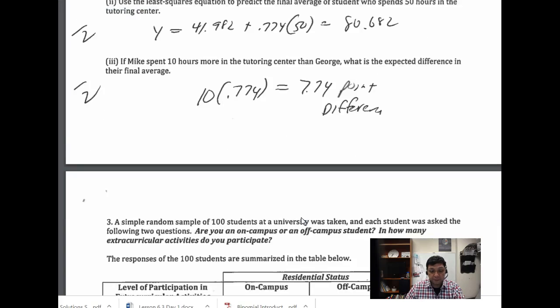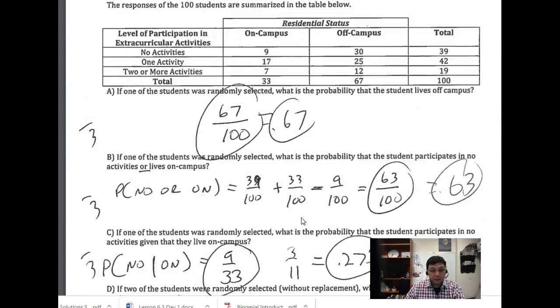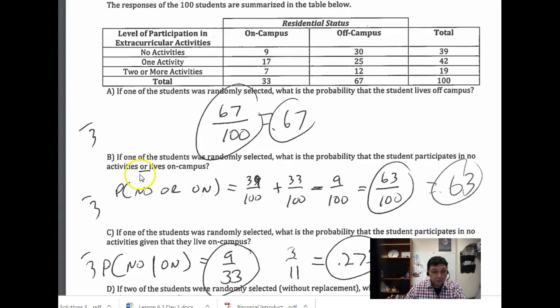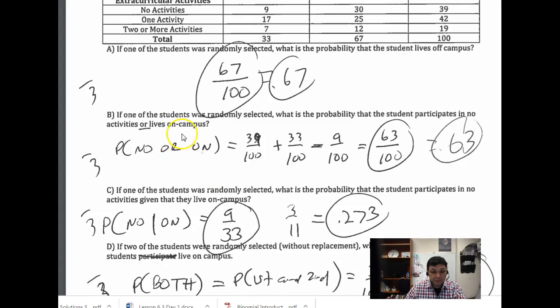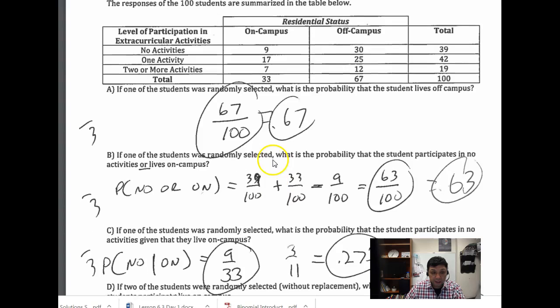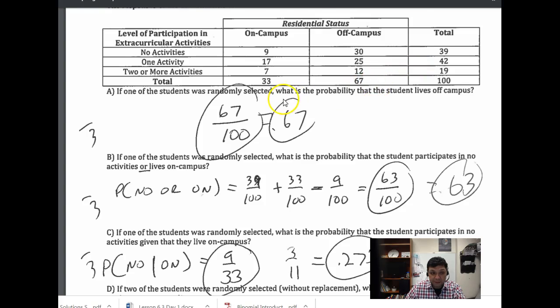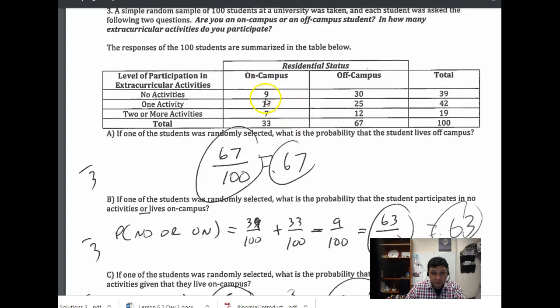On question three, those are the probability questions. The first one is just taking the total who live off campus divided by the total. Here's an 'or' situation, so you have to add: 39 who do no activities, 39 out of 100, plus those on campus, 33 out of 100. But notice there is overlap because these events are not disjoint. We have 9 here, so you have to subtract out that 9.